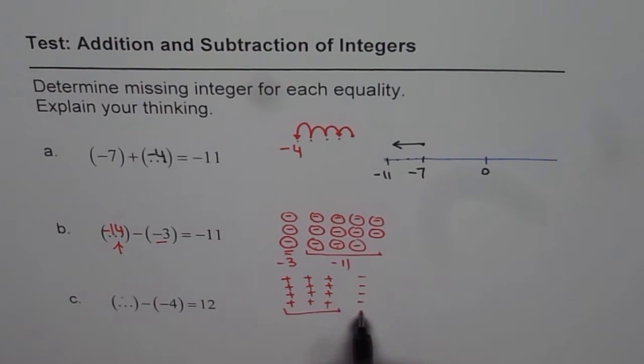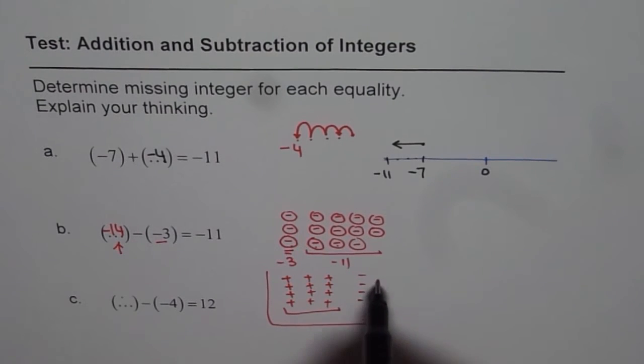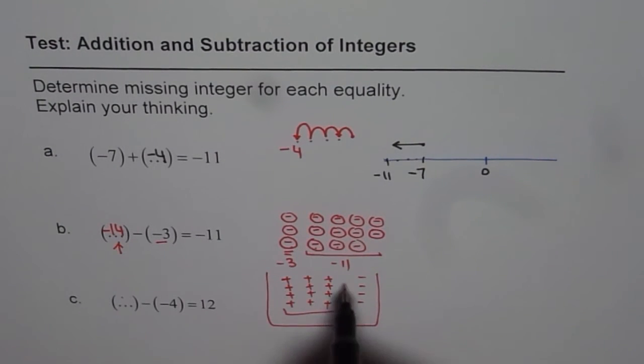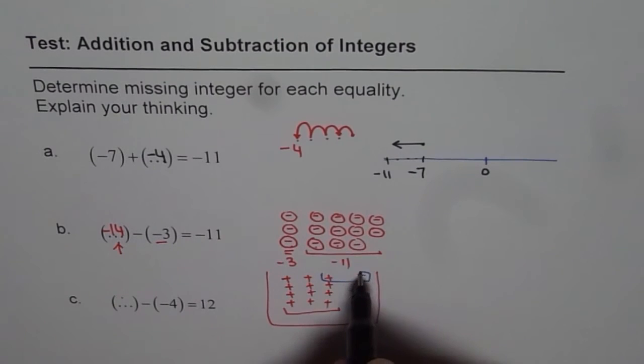So, once I take away these 4, I am left with 12. So, this is all the bucket contains. Do you see that? Now, if it contains all this, what integer it represents? Well, we know these combinations will make 0.